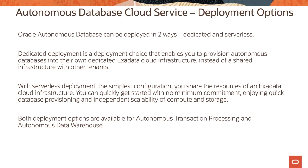Let's now look at the different deployment options for Autonomous Database Cloud Service. Autonomous Database can be deployed in two ways: dedicated and serverless. Dedicated deployment enables you to provision Autonomous Database into its own dedicated Exadata Cloud Infrastructure, instead of a shared infrastructure with other tenants. Basically, the customer will log into the OCI console, provision an Exadata infrastructure, and once provisioned, create container databases and then deploy Autonomous Data Warehouse or Transaction Processing dedicated services on top of it.